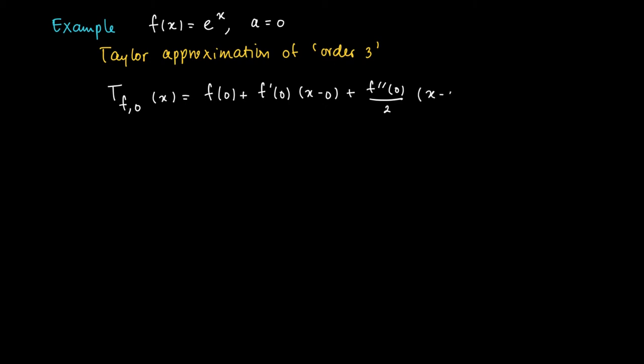plus the third derivative at 0 divided by 3 factorial, which is 6, times (x minus 0) to the power 3.